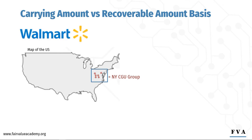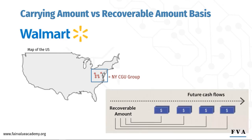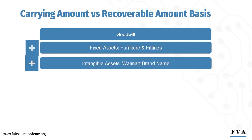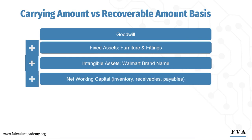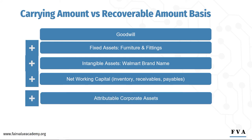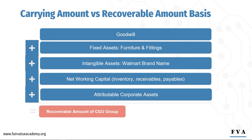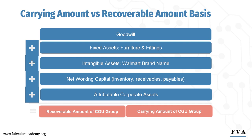Back to our Walmart example. Say we derive the future cash flows and determine the recoverable amount of Walmart's New York CGU group. For the New York CGU group to generate cash flows, the stores would need fixed assets such as furniture and fittings, the Walmart brand name for marketing purposes, net working capital for operations, and a share of corporate assets — for example, IT systems and office space for HR and accounting staff. Hence, all these are required to generate the recoverable amount of the New York CGU group. In the same way, the carrying amount of the New York CGU group should also include fixed assets, intangible assets, net working capital, and corporate assets to ensure a fair goodwill impairment assessment.